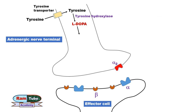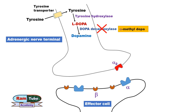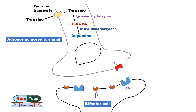In the next step, L-DOPA in the presence of the enzyme DOPA decarboxylase converts into dopamine. This step can be blocked by alpha-methyl dopa.